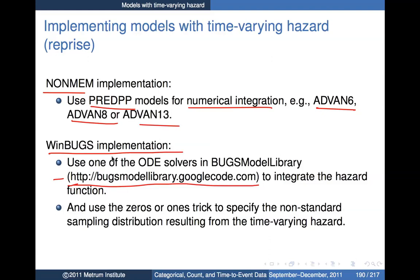You'd install Bugs Model Library and use one of the ODE solvers built into it to integrate the hazard function. But there's an additional complication — analogous to using the likelihood option in non-MEM — in that you have to have a way of specifying a general sampling distribution. There are a couple of tricks for that: one called the zeros trick and another called the ones trick, which can be used to specify non-standard sampling distributions resulting from having a time-varying hazard. I'll have to show you both of these components to actually implement an example.